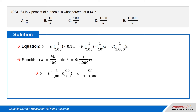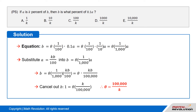We substitute A = kB/100 into the equation and get B = theta × (1/1000) × kB/100, which equals theta × kB / 100,000. Canceling B on both sides gives 1 = theta × k / 100,000, or theta = 100,000 / k.